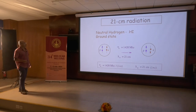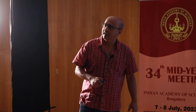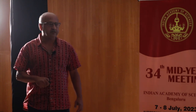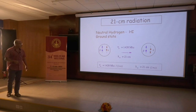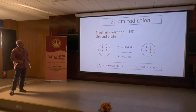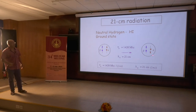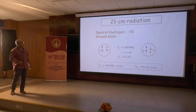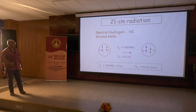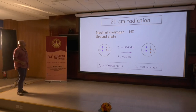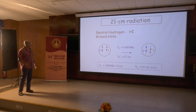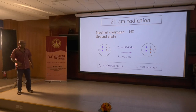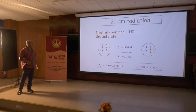This 21 centimeter line — H1 refers to neutral hydrogen. In the atomic ground state, there is a hyperfine splitting. There is one electron and one proton inside, and they have spins. If there is a spin flip, there is a slight change in energy, and the energy difference comes out as radiation with a wavelength of 21 centimeters. In terms of frequency, it is 1420 megahertz. If the hydrogen is far away, it will be redshifted and the frequency will be lower by a factor of 1 plus z.